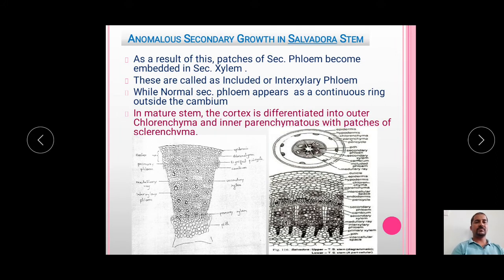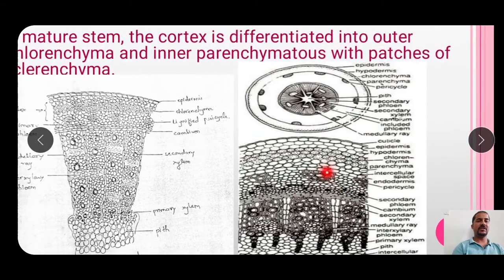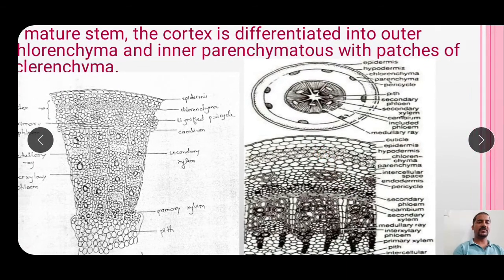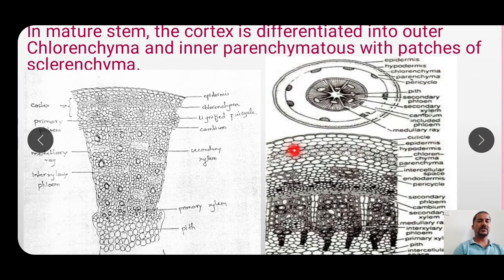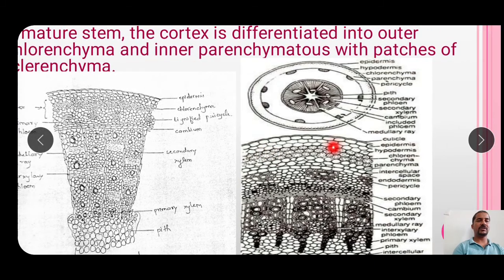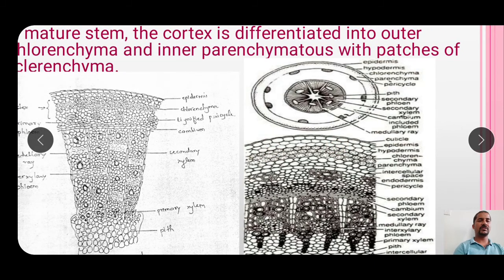In the mature stem, the cortex is differentiated into the outer chlorenchyma and inner parenchymatous tissue with patches of sclerenchyma. In this diagram you can see the outer chlorenchyma and towards the inner side there is parenchyma with patches of sclerenchyma.